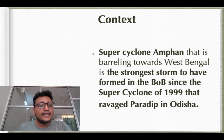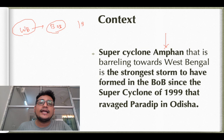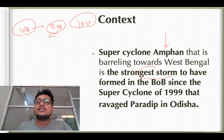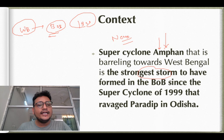First of all, why is this in news? Because super cyclone Amphan is approaching towards West Bengal, which is the strongest storm to have formed in the Bay of Bengal since 1999. 1999 ke baad Bay of Bengal mein banne wala ek strongest storm hai — super cyclone Amphan — inhi karno se ye news mein bhi raha.